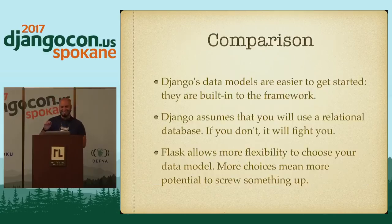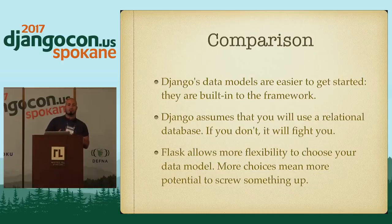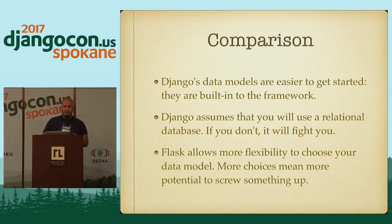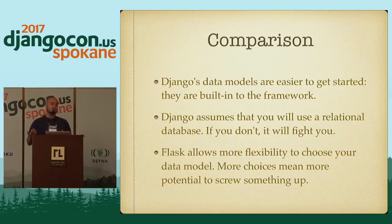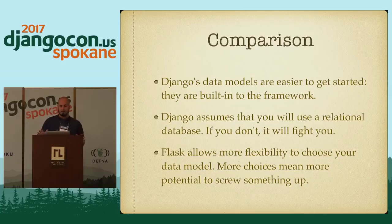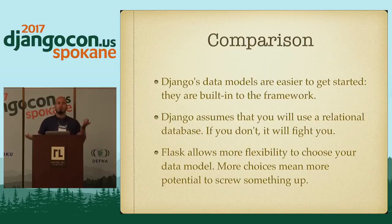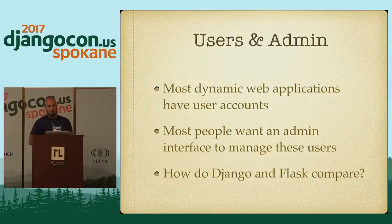So to compare data models at a higher level: Django's data models are easier to get started with because they're built in — you don't need to install anything extra. However, Flask allows more flexibility to choose whatever you want to use. Django assumes you're going to use a relational database; with Flask, you can use whatever you want — Mongo, Google App Engine's datastore, anything. Of course, the more options you have, the more flexibility you have, and the more chance you have to screw something up. It's a tradeoff.